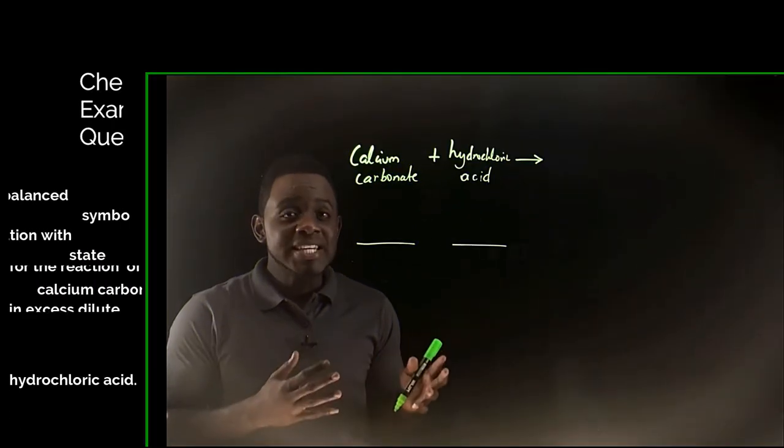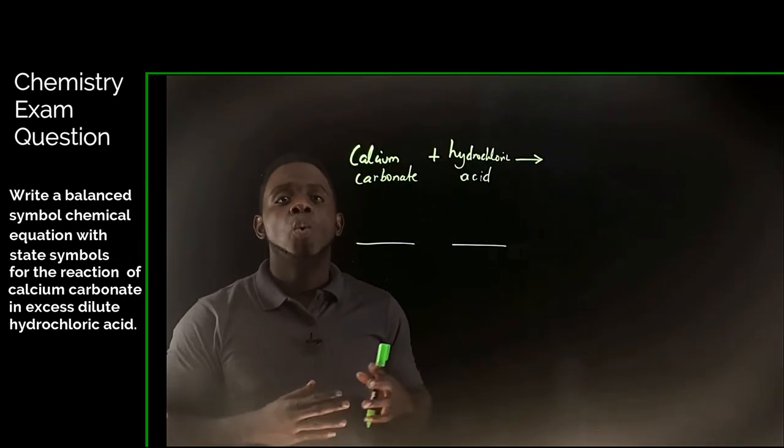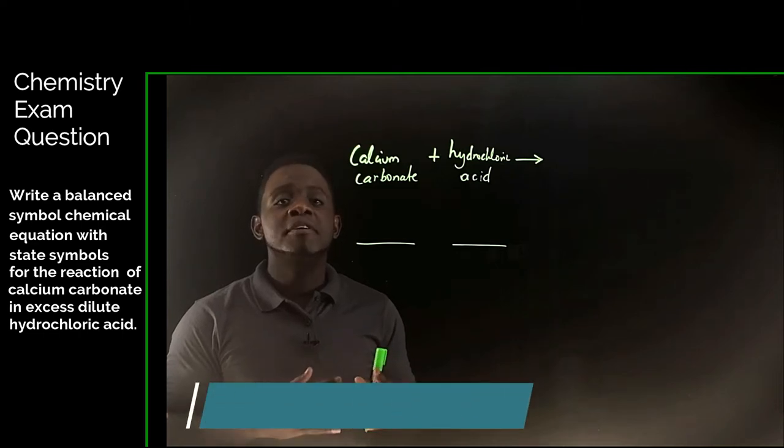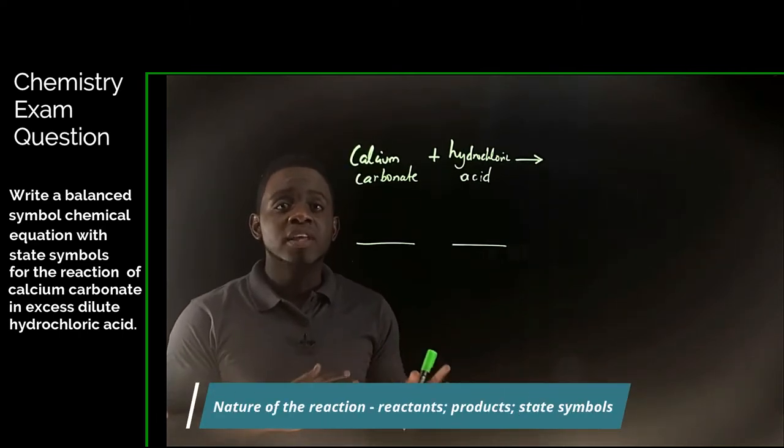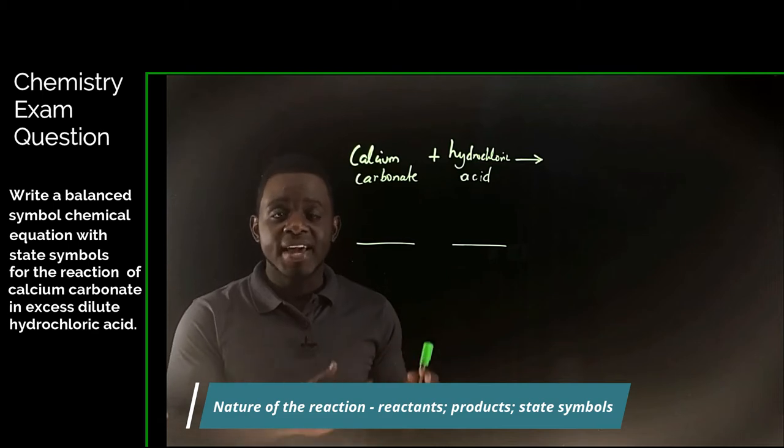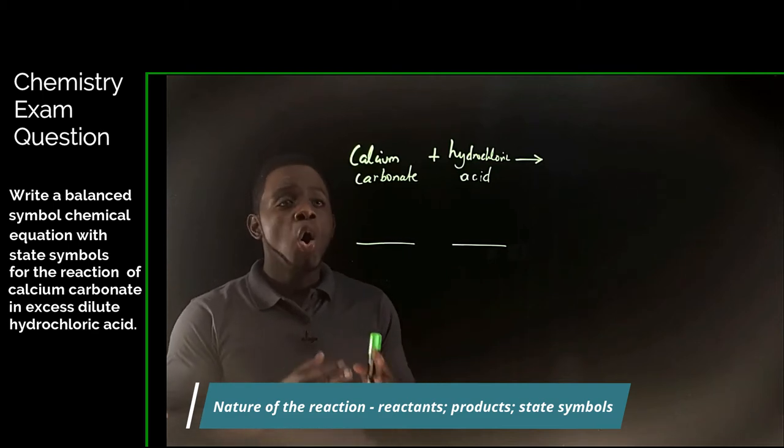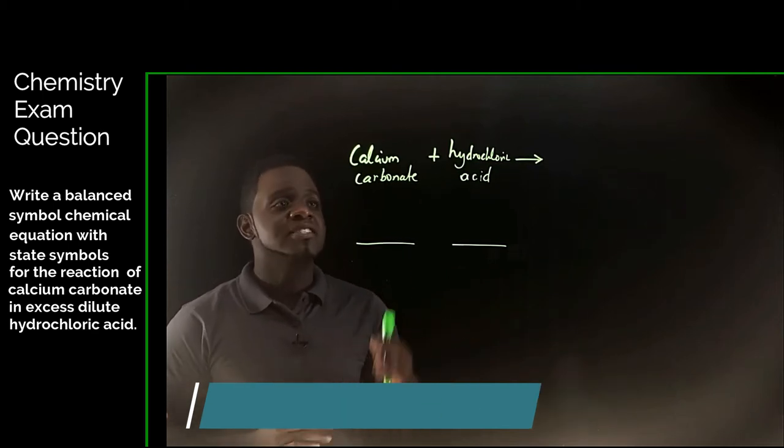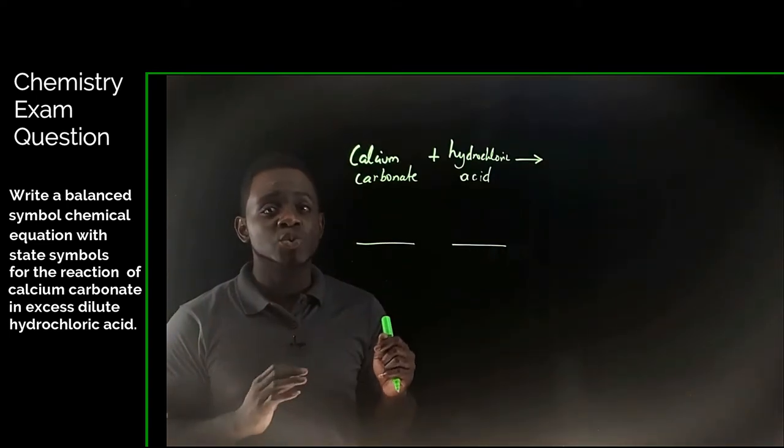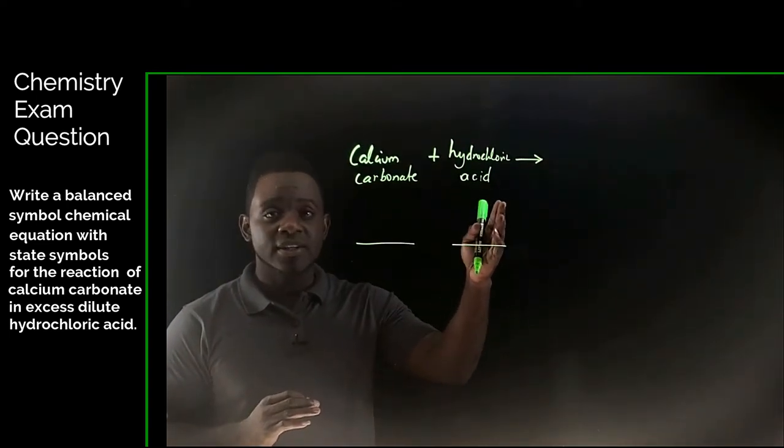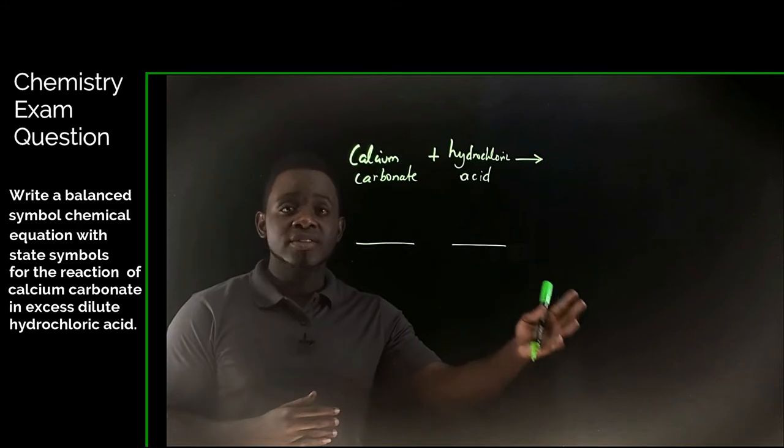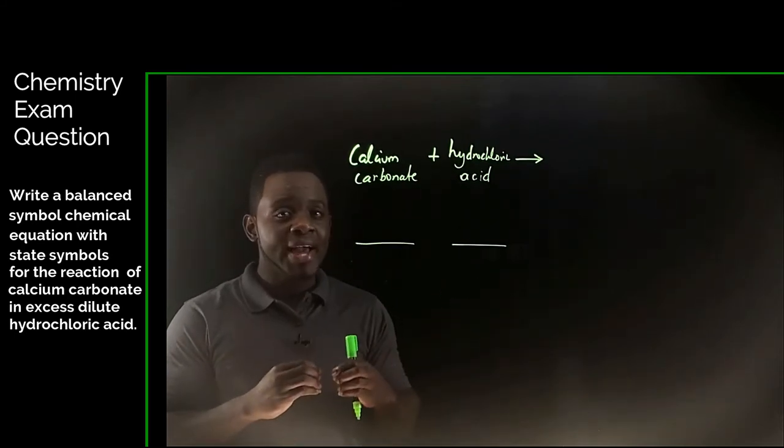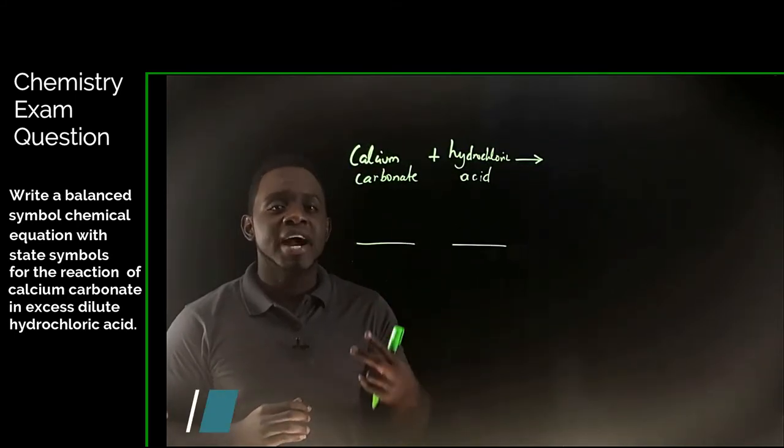We will need to kick things off with an understanding of the nature of the reaction that will give us the reactants, the products, and their state symbols. All we have from the question is that calcium carbonate reacts with hydrochloric acid. Now to know what the products are, we need to rely on the theory of the reaction of acids.